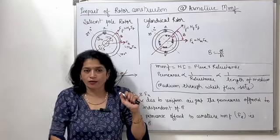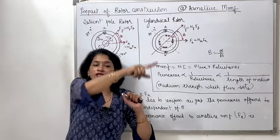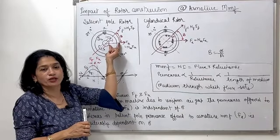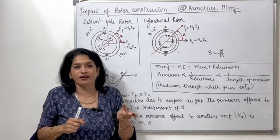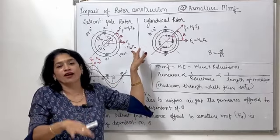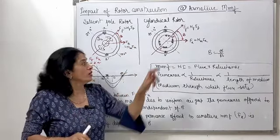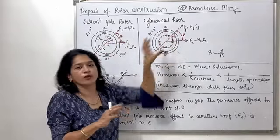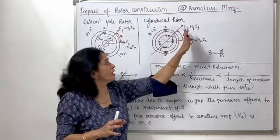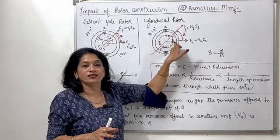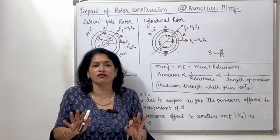How much FA is set depends entirely on the reluctance of the path. The flux loops of the armature MMF complete their path through the air gap. In the salient pole case, the armature flux finds a large air gap in its path at the interpolar region — this large air gap length means the MMF set or flux set is less. The quantity of armature MMF varies depending on the location of the rotor relative to the armature MMF direction.